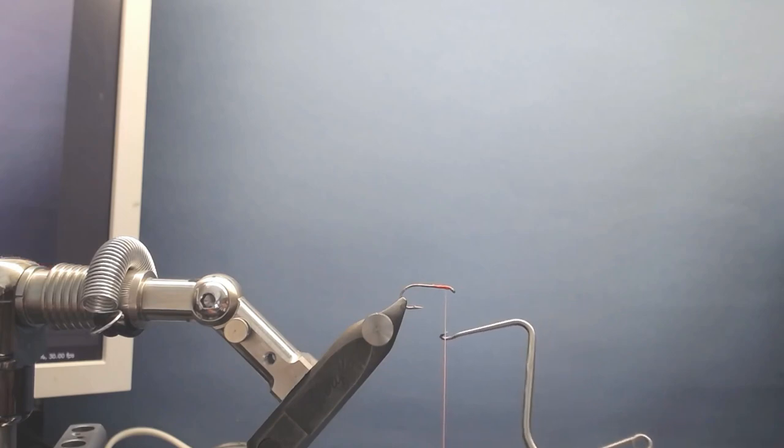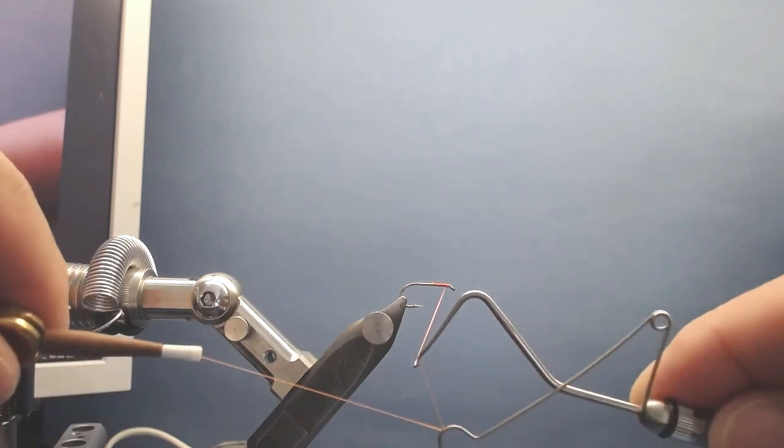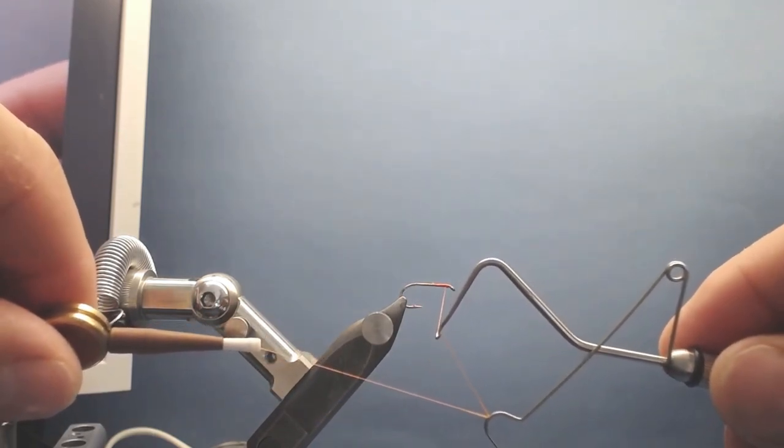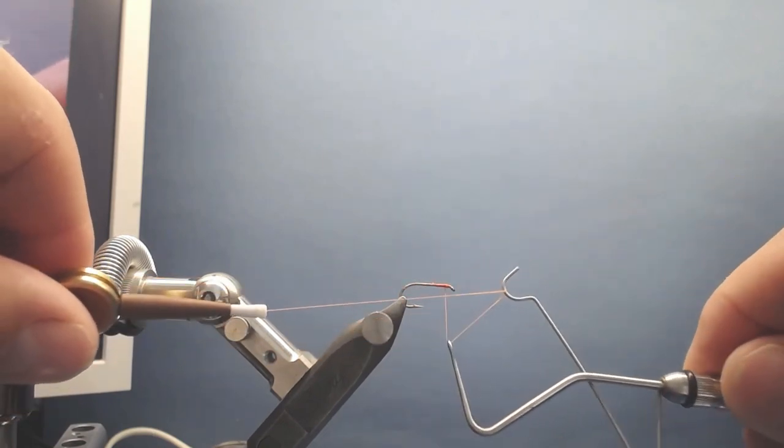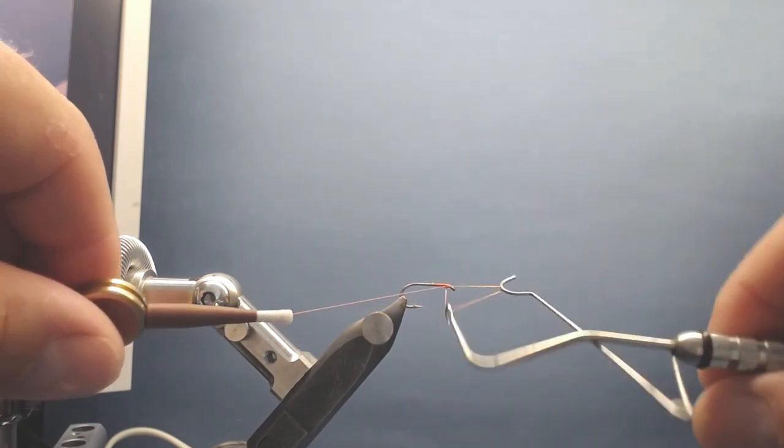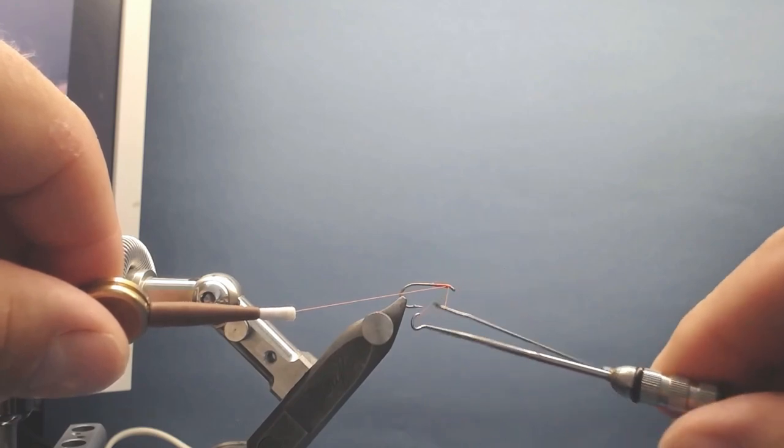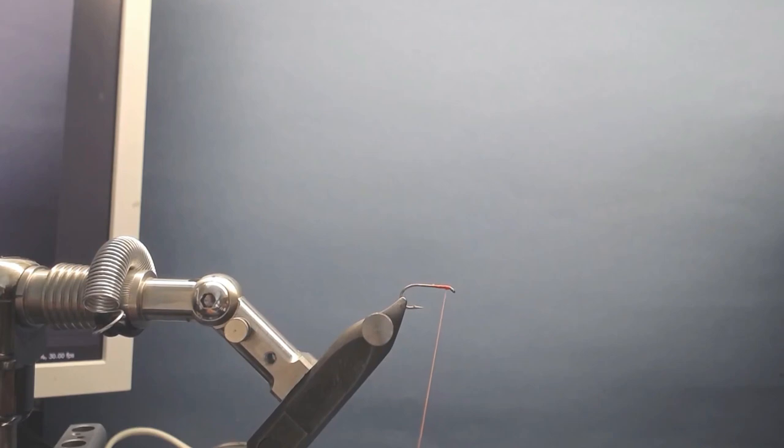I'm going to repeat it. Put the thread inside the two hooks like this, take your bobbin out to the left, and wind it around like this. Keep the thread in the hooks and around we go.